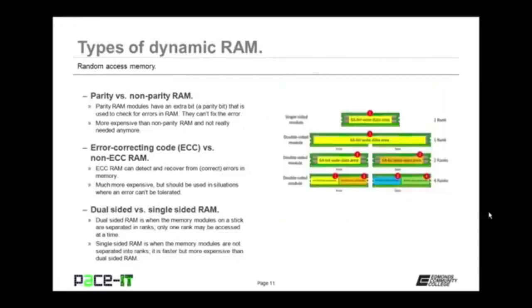There's another thing to consider about RAM: it can be dual-sided or single-sided. Dual-sided RAM is when memory modules on a stick are separated into ranks — only one rank may be accessed at a time. Single-sided RAM is when memory modules are not separated into ranks. It is faster but more expensive than dual-sided RAM.